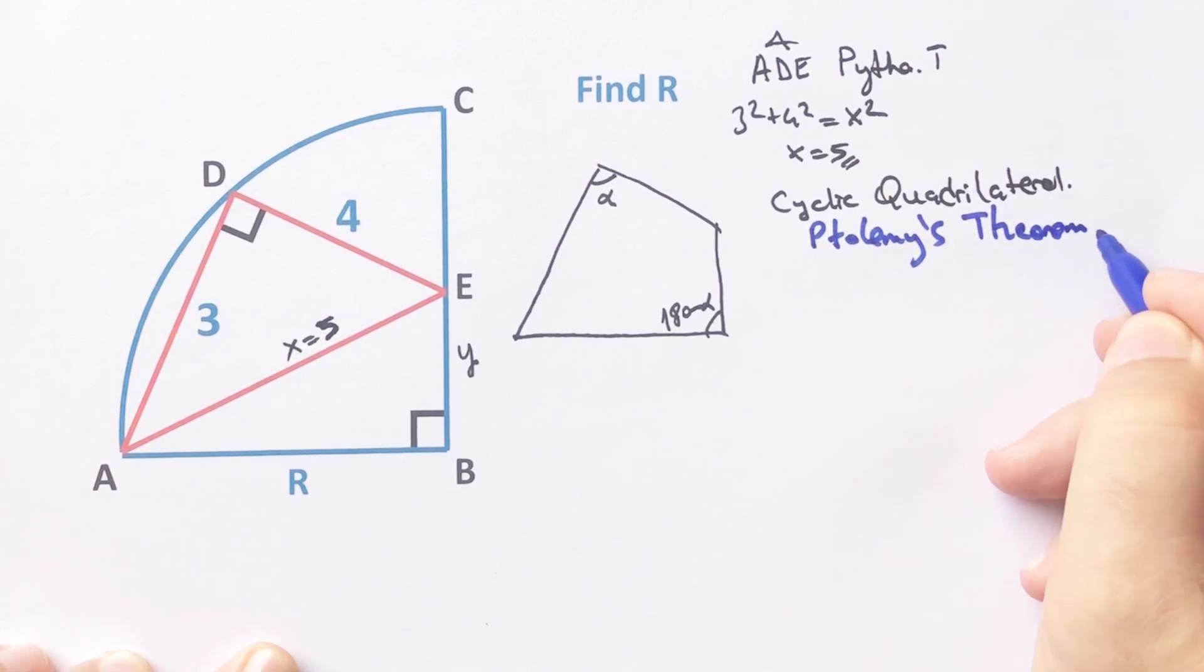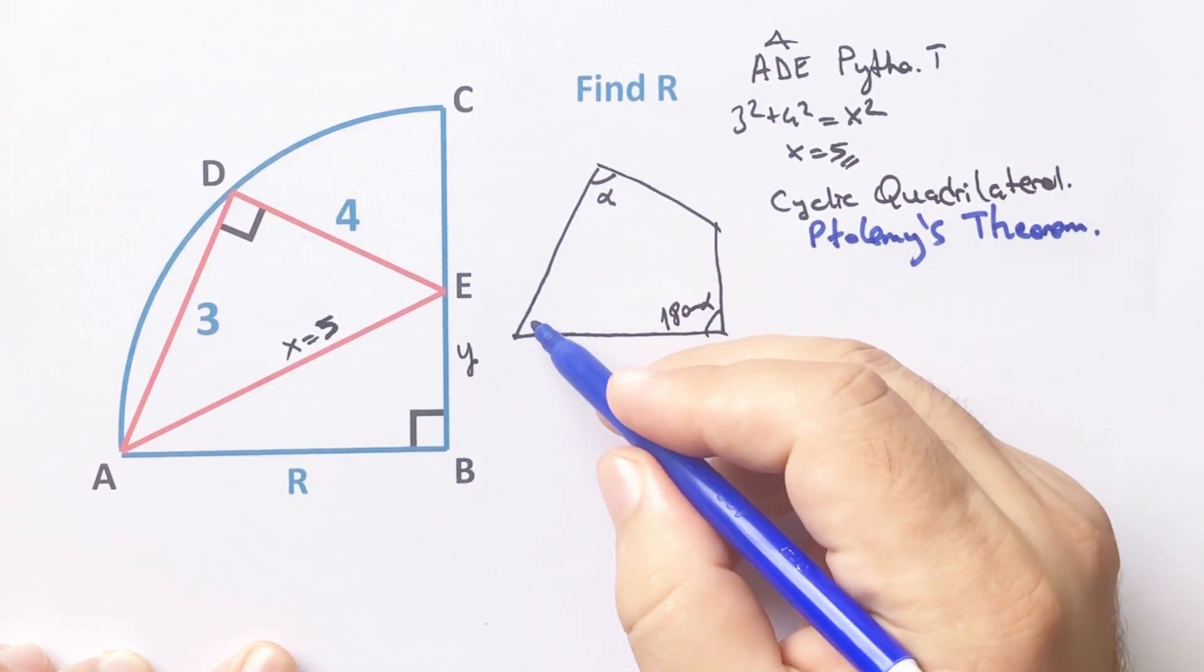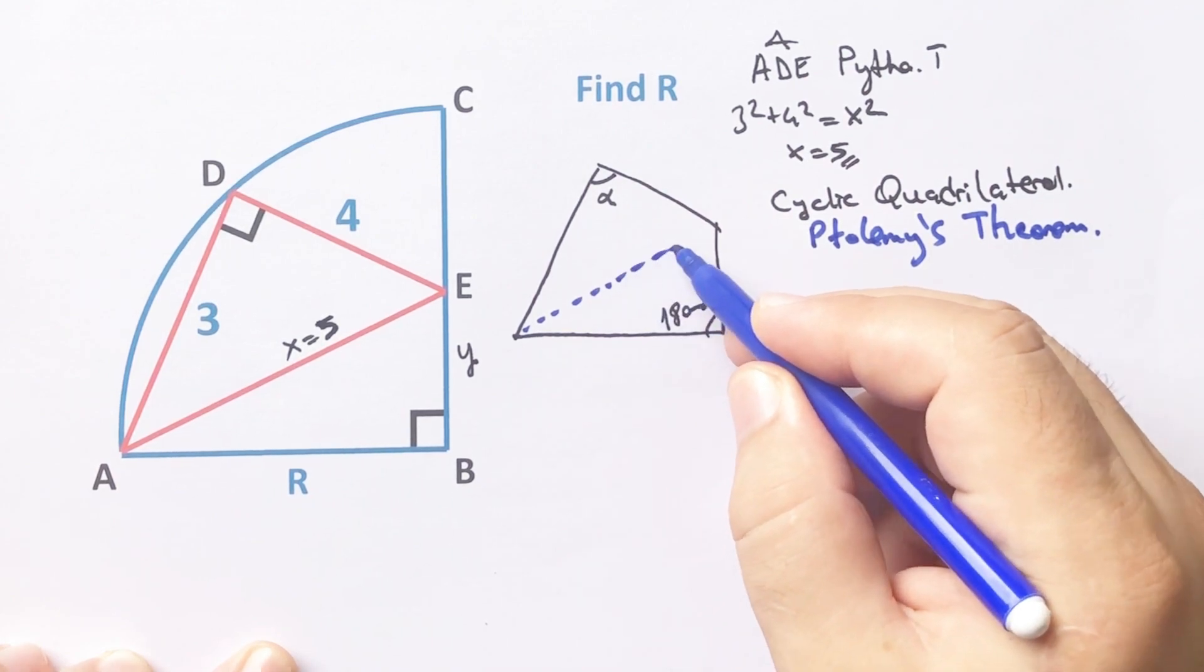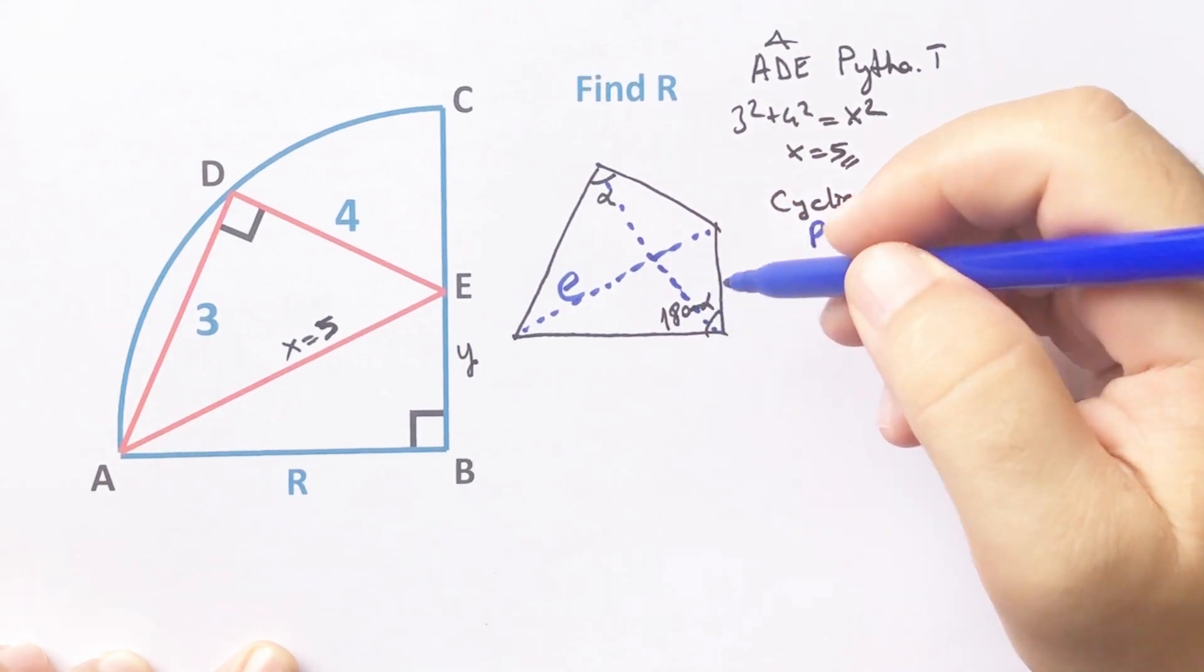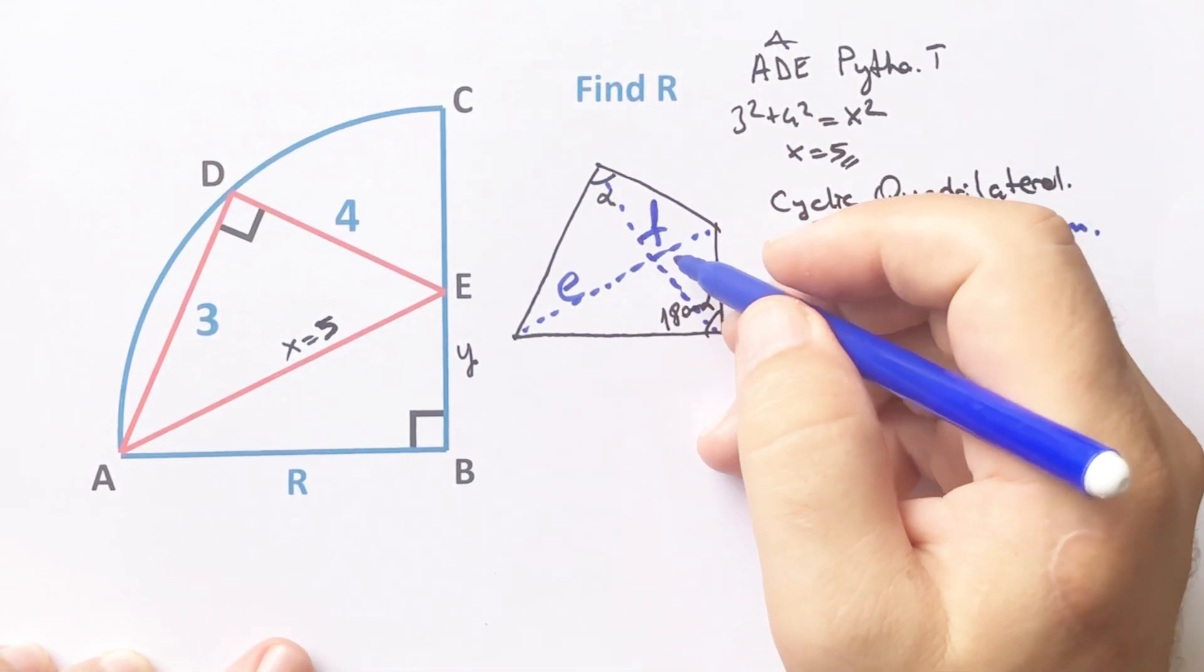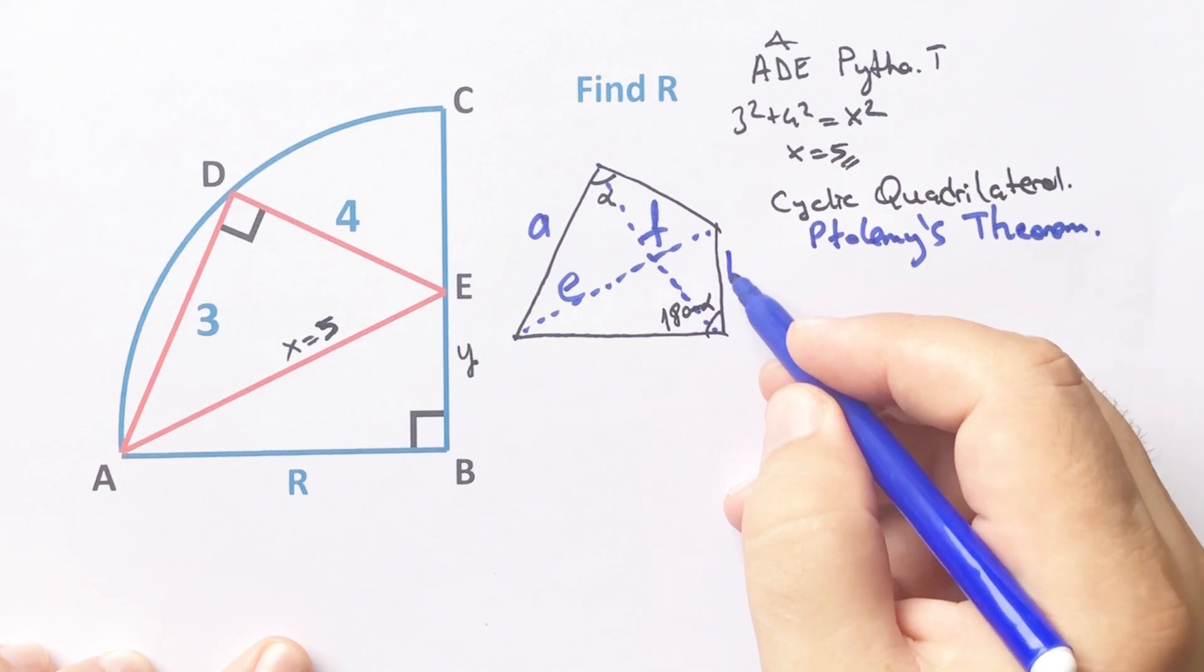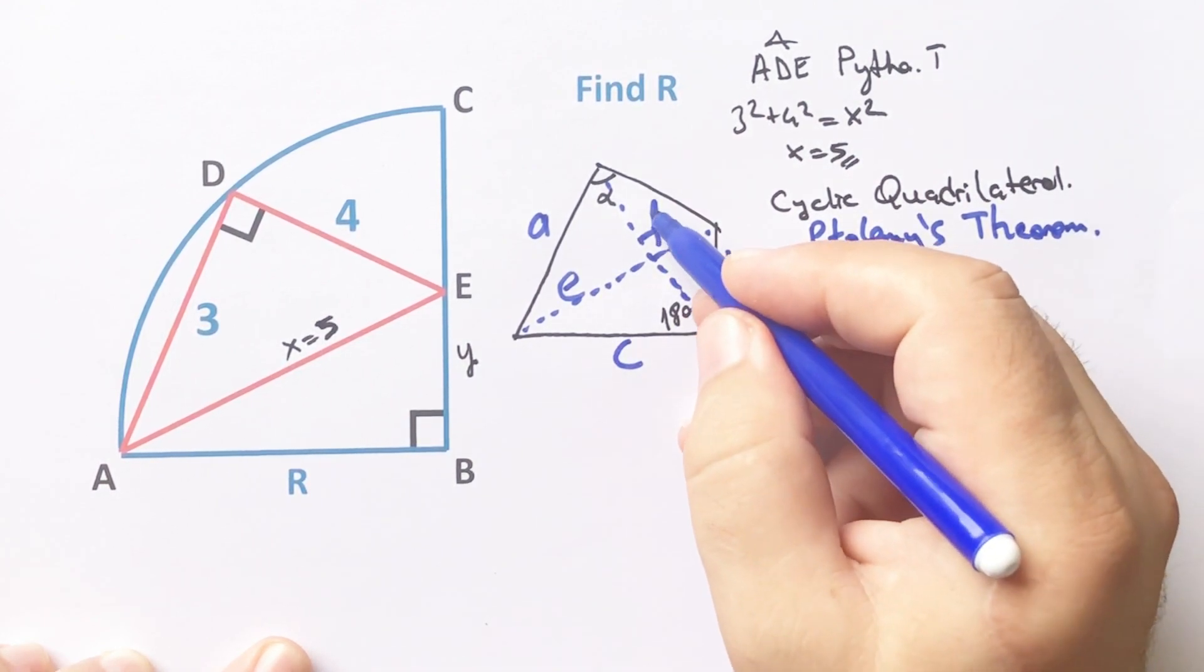According to Ptolemy's theorem, let's call this diagonal e and the other diagonal f, and here a, b, c, d.